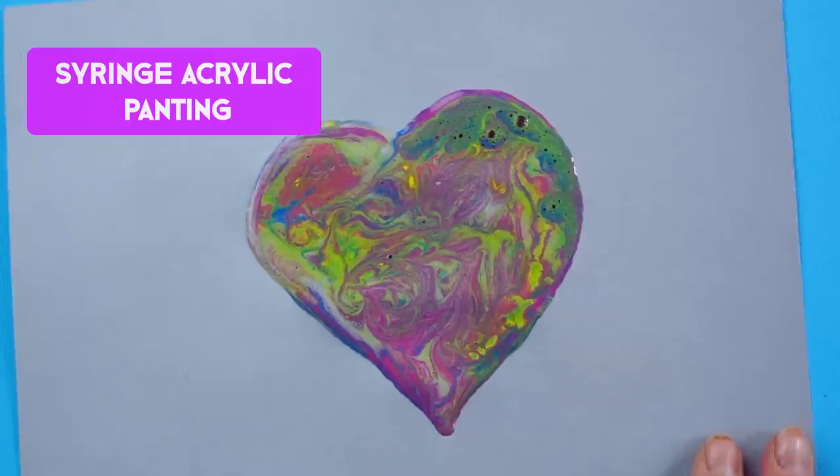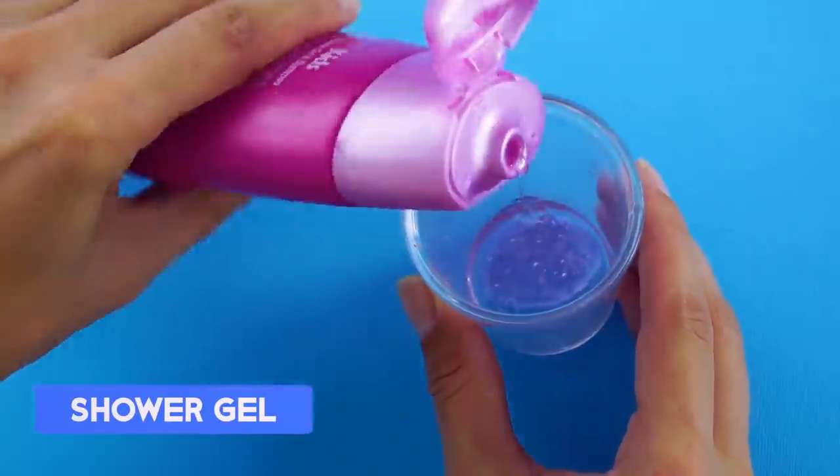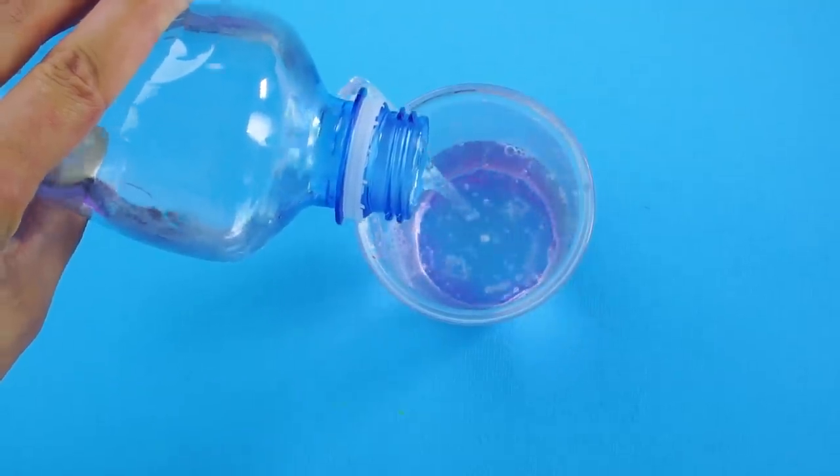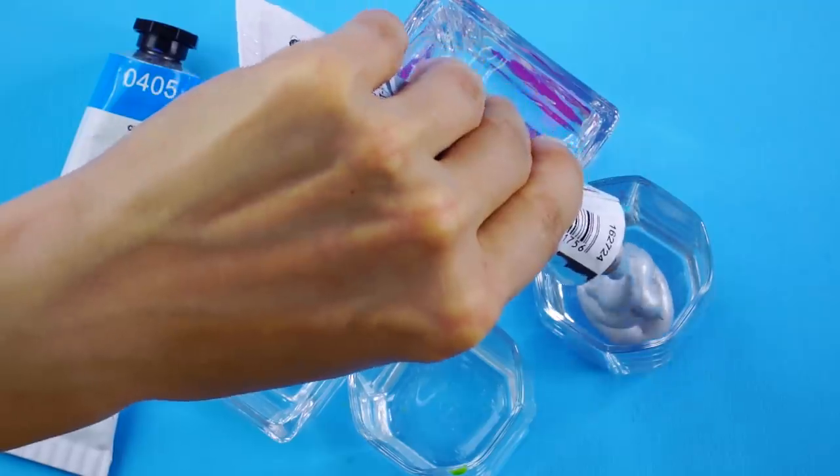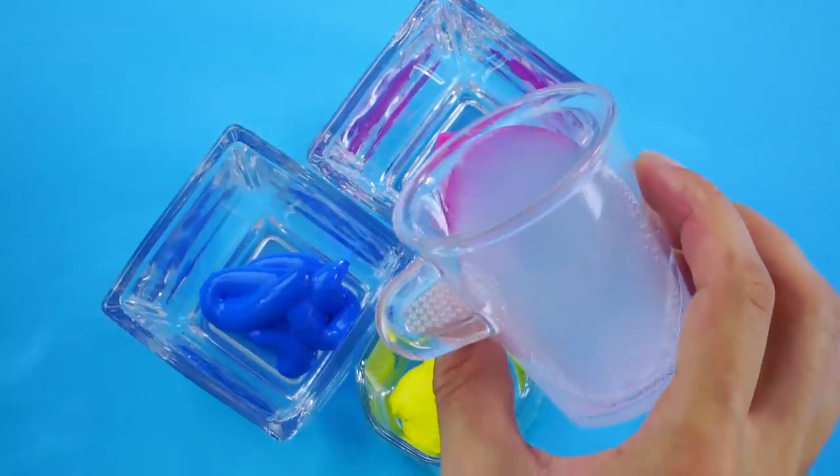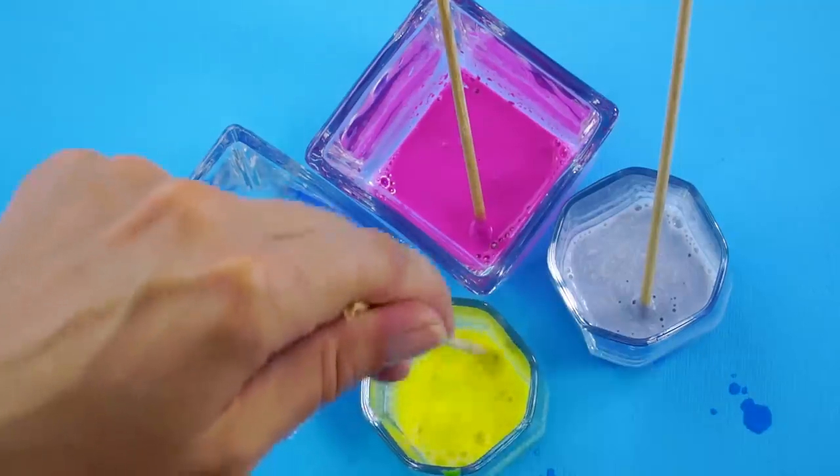Syringe Acrylic Painting. Let's make some more interesting art, shall we? Mix some shower gel with some water and stir. Then put some acrylic paint into a few separate containers. Pour some of your shower gel mix into each color and give it a stir with a craft stick.